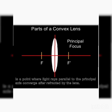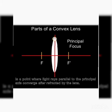अब बात करते हैं principal focus की। Principal focus क्या होता है? It is the point where light rays parallel to the principal axis converge after passing through the lens। यह ऐसा point है जिसमें — simple सी बात यह है — जब आपके पास lens में से light pass करती है, फर्ज़ करें आपने यहाँ से light pass की, light आगे strike करेगी और bend हो जाएगी inward।